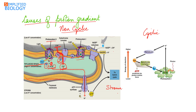When photosystem 1 gets excited, it releases two electrons to ferredoxin. This occurs towards the outer surface of the thylakoid membrane. Ferredoxin then reduces NADP⁺ to NADPH with the help of NADP reductase enzyme. When NADP⁺ is reduced to NADPH, protons are taken from the stroma — occurring towards the outer side of the thylakoid membrane. This creates the third reason for the proton gradient.